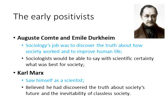Early sociology was dominated by positivism. Auguste Comte and Emile Durkheim were two key figures who said that sociology's job was to discover the truth about how society worked and to improve human life. Sociologists would be able to say with scientific certainty what was best for society. Karl Marx was also part of this tradition and saw himself as a scientist. He believed he had discovered the truth about society's future and the inevitability of a classless society — communism — and therefore the collapse of capitalism.